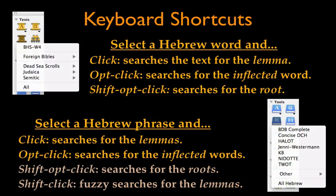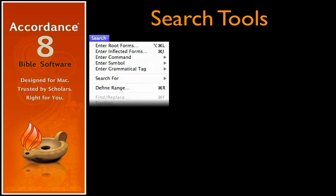These same types of Hebrew searches are used when amplifying. Here are the keyboard shortcuts used when amplifying to the resource palette: select the word or phrase, press the appropriate modifier keys, then click to open the top text or tool, or click and drag to select a different resource. And of course,